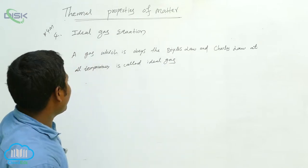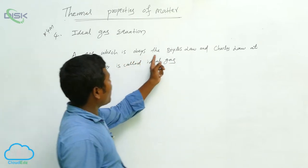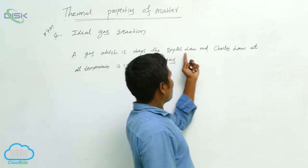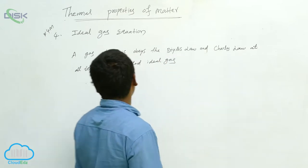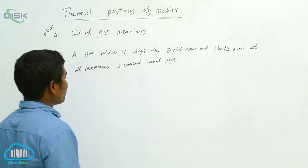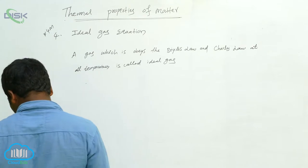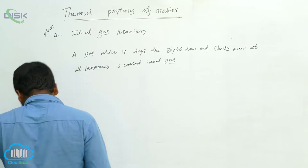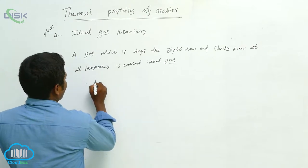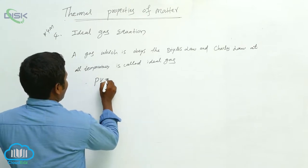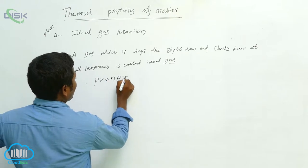What is the ideal gas? A gas which obeys Boyle's law and Charles' law at all temperatures is called an ideal gas. The ideal gas equation in general is PV is equal to nRT.